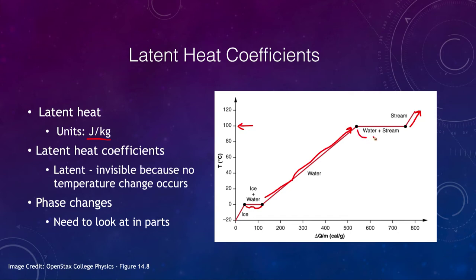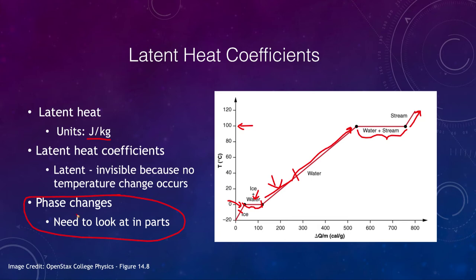When solving a problem that involves taking ice into water, you need to look at these stages individually: how much energy it took to warm the ice to zero degrees, then how much to convert the ice into water, and then how much to heat that water to the final temperature. You may need to split this into three parts and add those energies for a total. The reason we call these coefficients 'latent' is that we're not seeing a temperature change — it's invisible; all we see is the phase change.